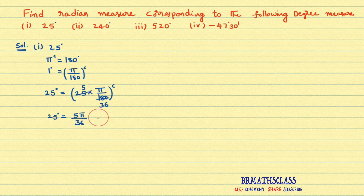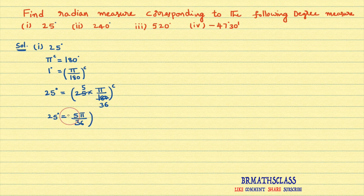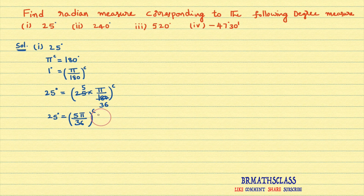Simply written like this, it indicates it is a radian measure. However, we can also write the notation power c. This is the notation for radian measure. So we learned how to convert 25 degrees into radian measure.